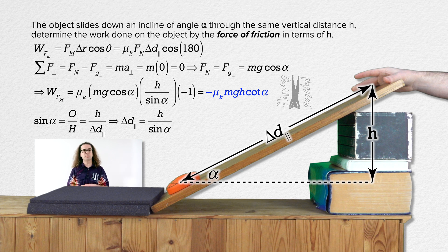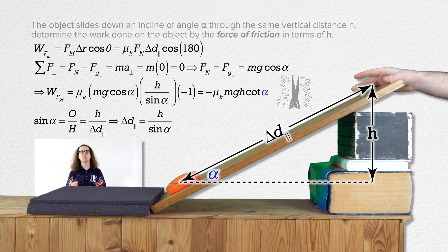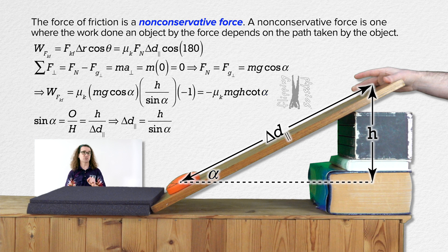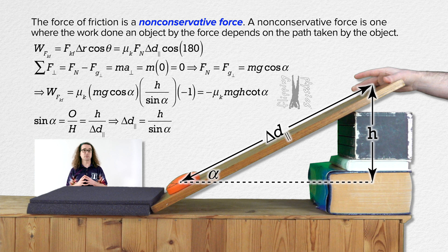Now, you should be able to see from that equation that the work done by the force of friction on the object changes depending on the angle of the incline, alpha. That means the work done by the force of friction is dependent on the path taken by the object, which makes the force of friction a non-conservative force.